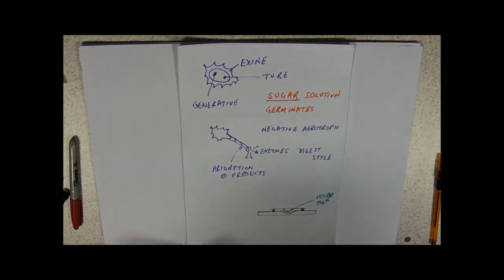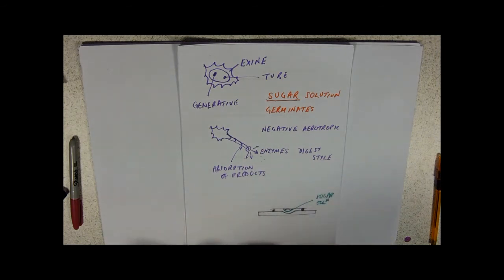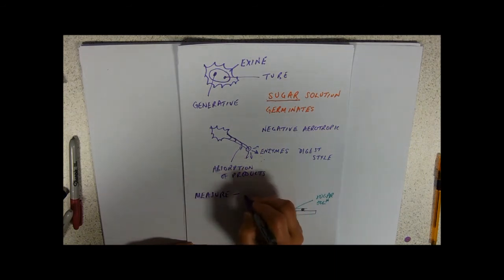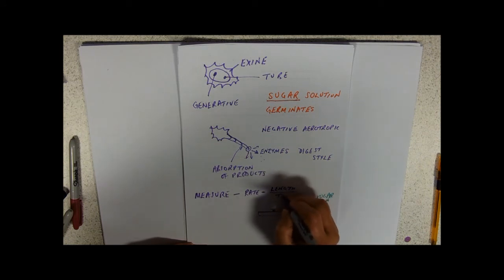Because the pollen grains are negatively aerotropic, we then have this drop of sugar solution. I've deliberately called it sugar and not sucrose. Because the pollen grains are negatively growing away from the air, they actually grow out along the surface of the slide. You can measure the pollen tube and from that you can calculate, if you know the time, the rate by how much it's grown divided by the time it's taken to grow that long.